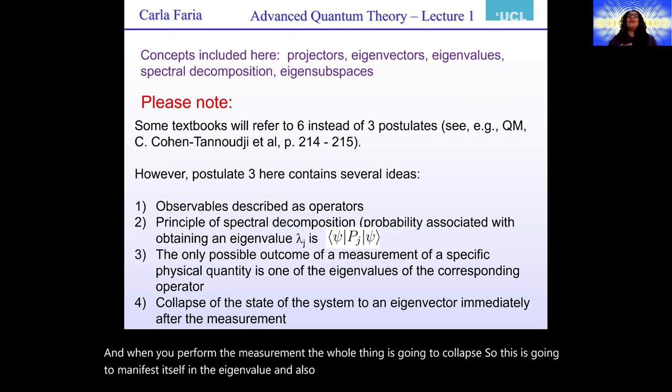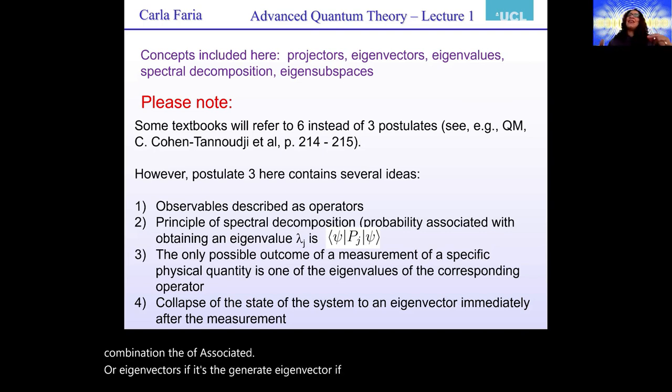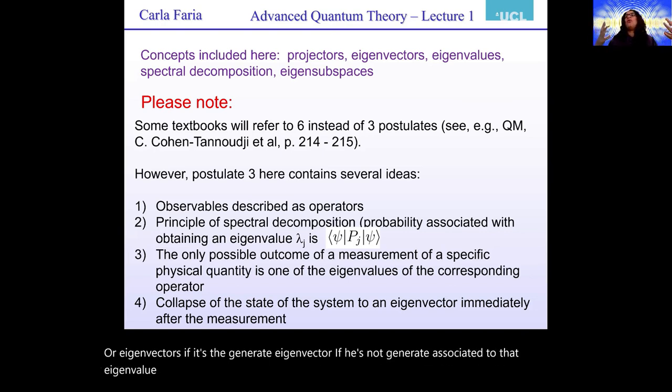So this is going to manifest itself in the eigenvalue and also the state of the system is going to change. So you are going to have an eigenvector or if you have a degenerate state, let's say a combination thereof of eigenvectors, if it is degenerate, eigenvector if it is non-degenerate, associated to that eigenvalue lambda j. So you're projecting onto the eigensubspace associated with that.